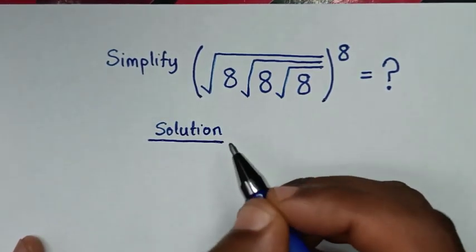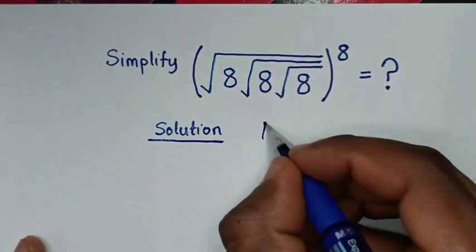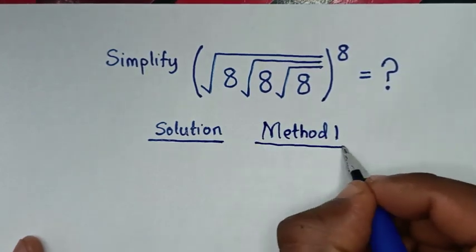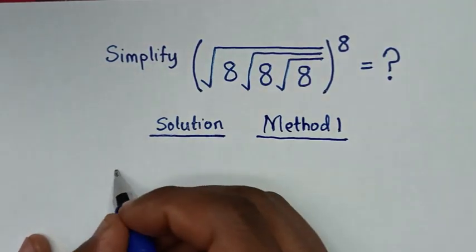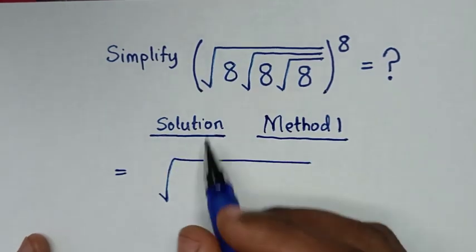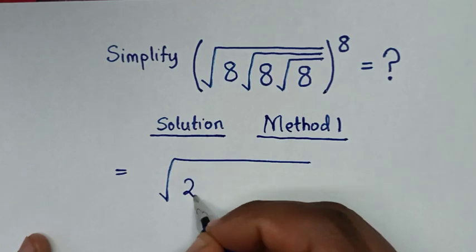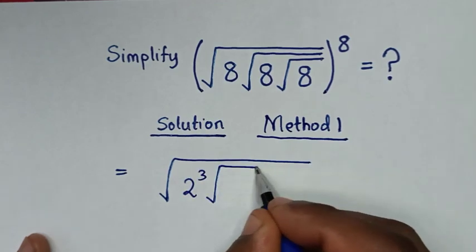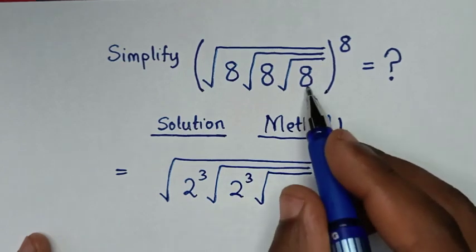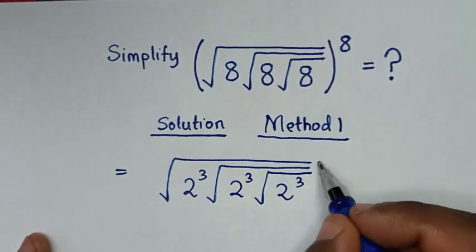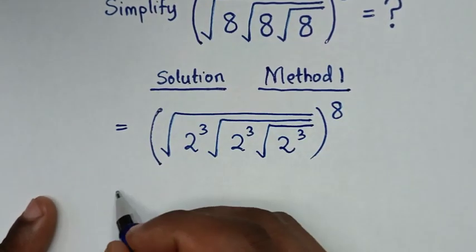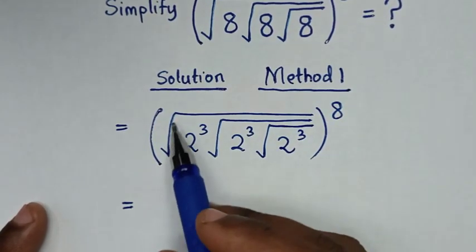Now for the solution, we have two methods. Let's call this Method 1. It will be equal to square root of 8, which we change into exponent form: 8 is the same as 2 power 3. Then square root of 2 power 3, then under square root of 2 power 3, bracket power of 8.